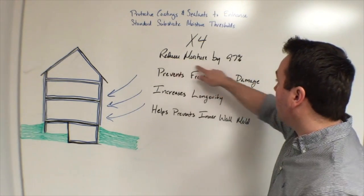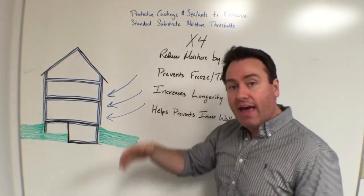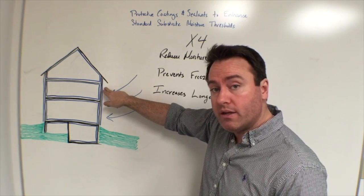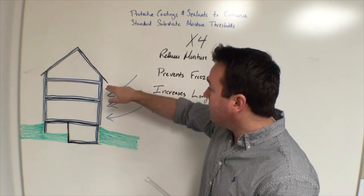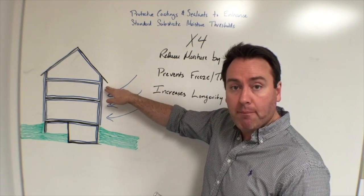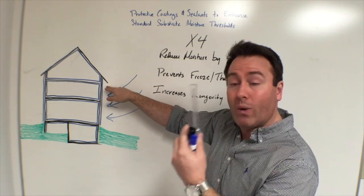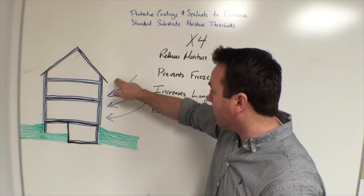So when we talk about reduces moisture by 97%, we're actually saying that in standardized testing, X4 has been proven to reduce the amount of moisture through wind-driven rain into the side of a building by 97% across all wind speeds. Beginning at hurricane force winds and working on down from there.